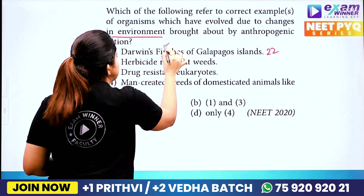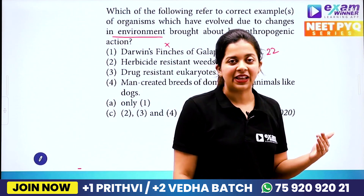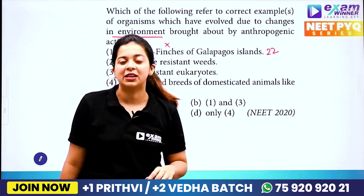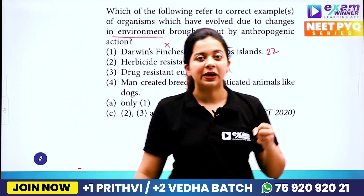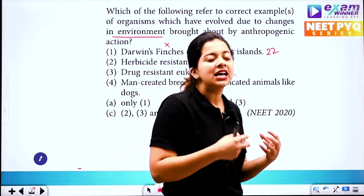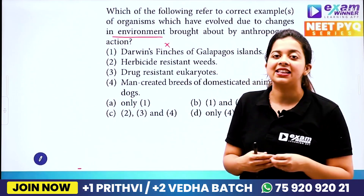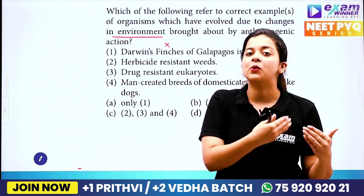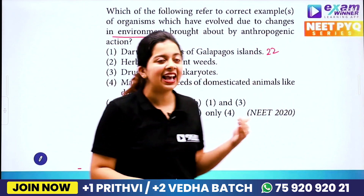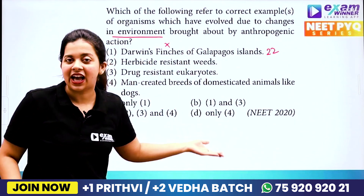So, the first option is not correct. Then, herbicide resistant weeds — herbicide is used by humans. When we use herbicide, weeds develop resistance. If there is any mutation, we get herbicide resistance. The herbicide resistant plants survive. So herbicide resistant weeds are caused because of humans — that is anthropogenic.